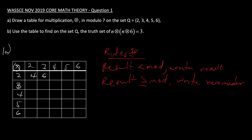Now two times four is eight. Eight is greater than the modulo, so we divide eight by seven and write the remainder. Eight divided by seven gives one remainder one, so we write one. Two times five is ten — ten is greater than seven, so we divide by seven and write the remainder. Ten divided by seven gives one remainder three, so we write three.